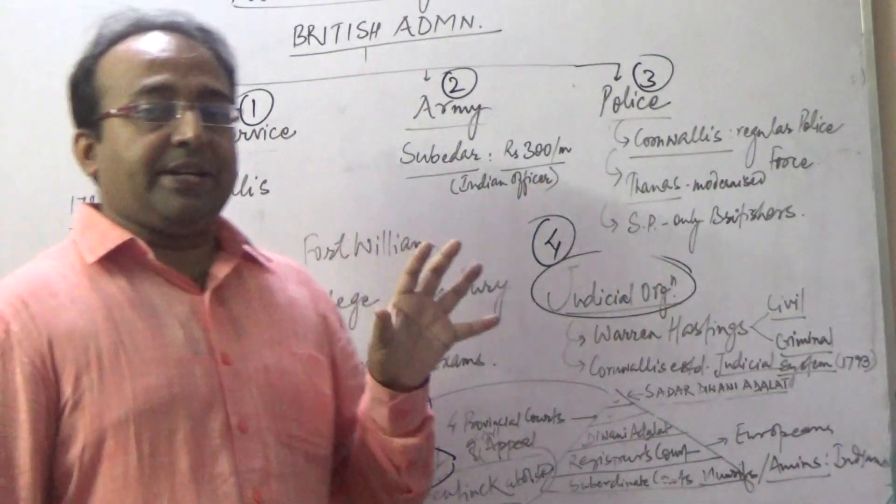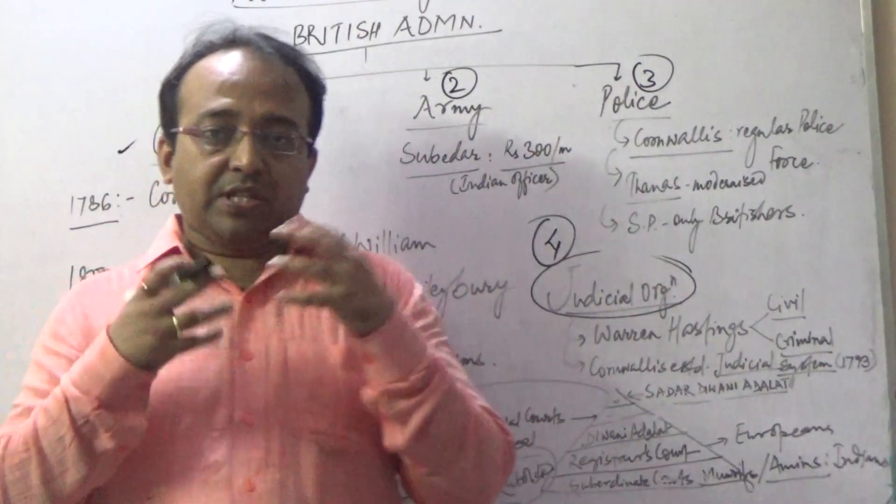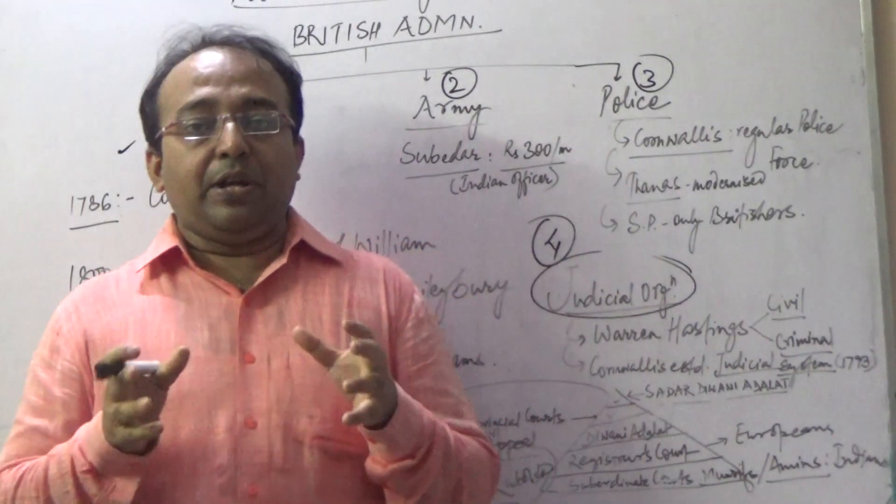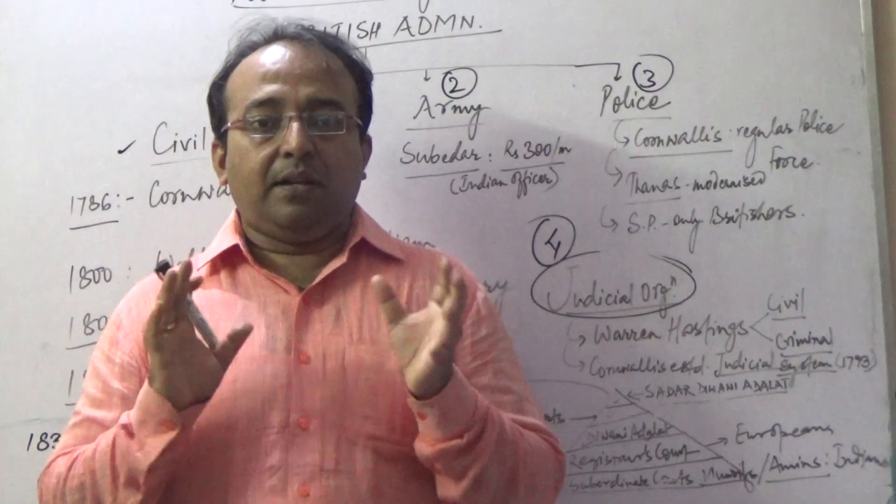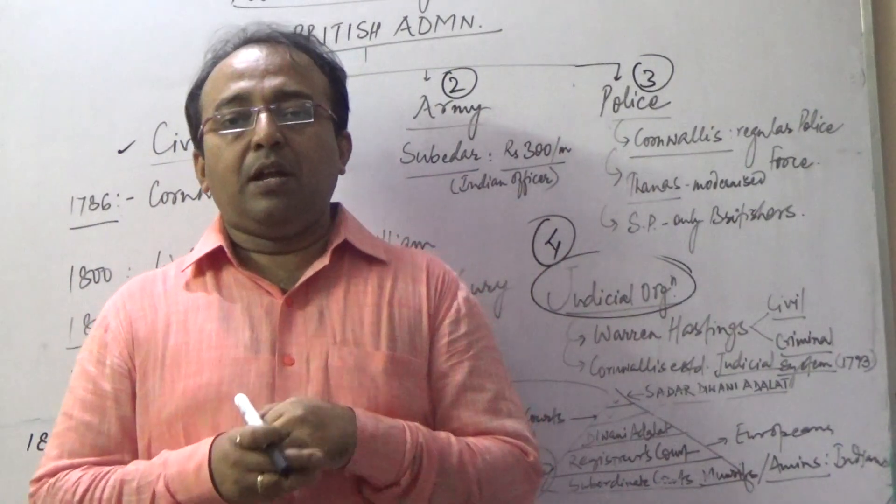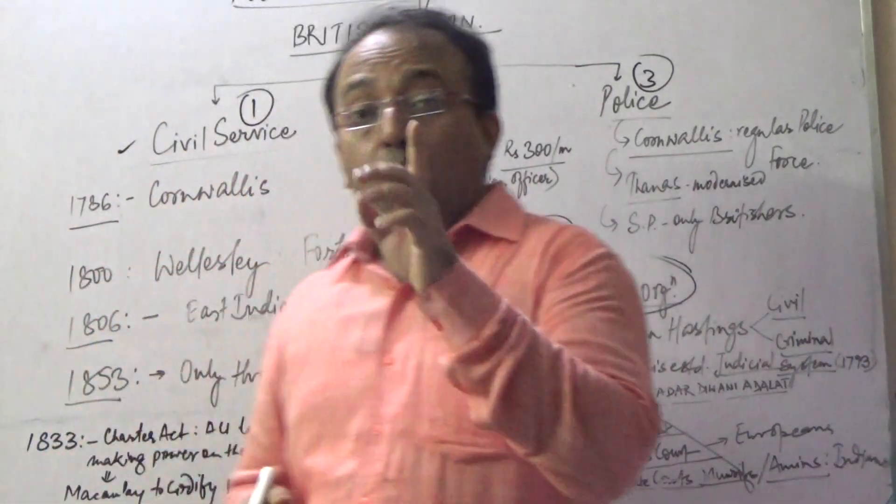All these four important pillars of the entire British administration system in India were established by the Governor Generals appointed by the Britishers only. But the most important fact for all of you is the role of Lord Cornwallis.